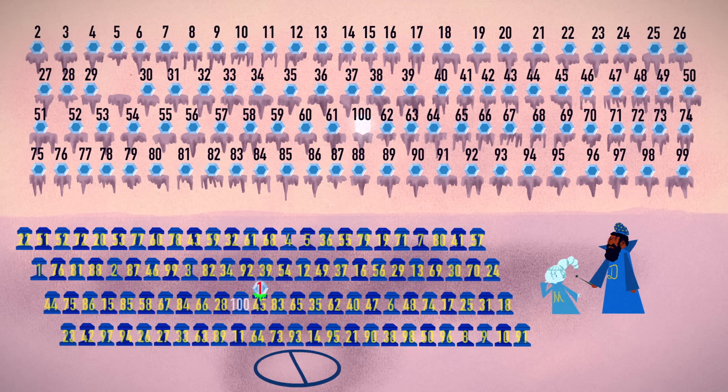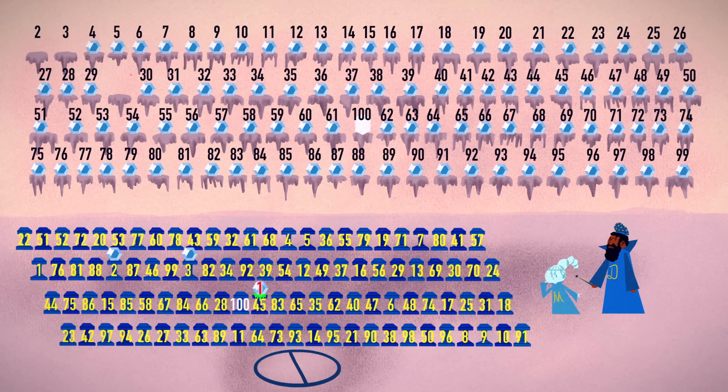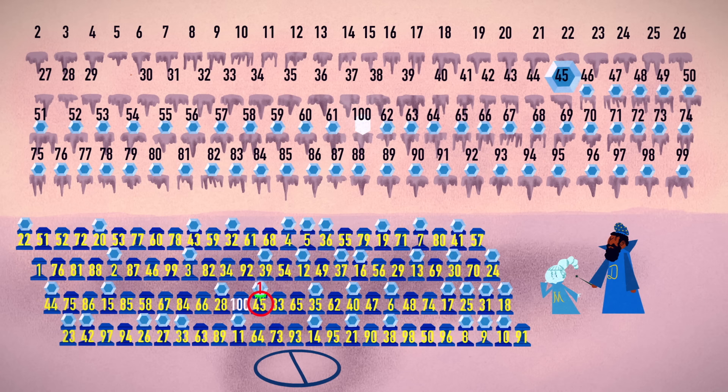Suppose the henchman placed stone 1 on, say, platform 45. Then you'd place stone 2 on platform 2, 3 on 3, and so on, until you got to stone 45. Its platform being taken, a random platform would light up.